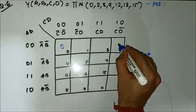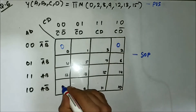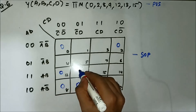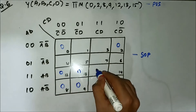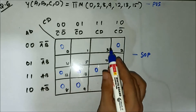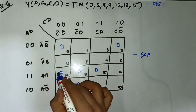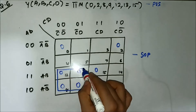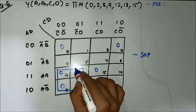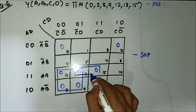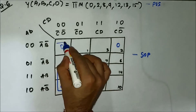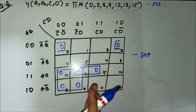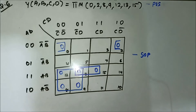We will map this whole expression into the KMAP. So mapping cells 0, 2, 8, 9, 12, 13, and 15. The grouping can be done as: first here we can form a quad, then we will form a pair, and here we will form another pair. So total 3 groups are formed.